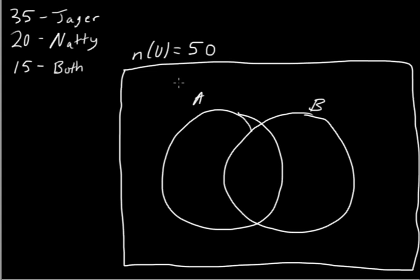There are 50 students at a house party. 35 of them are drinking Jägermeister, 20 of them are drinking Natty Ice, and 15 are drinking both, and are probably going to die. We're trying to solve for the number of students drinking neither Jägermeister or Natty.